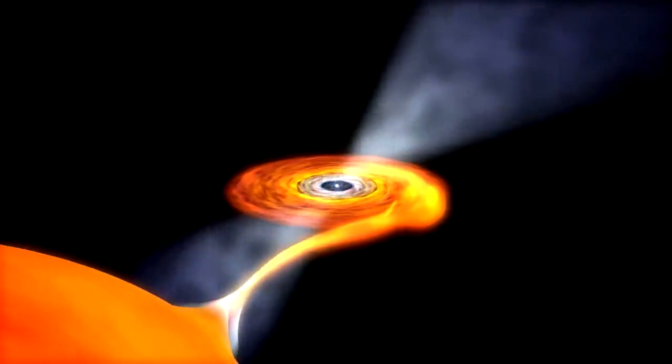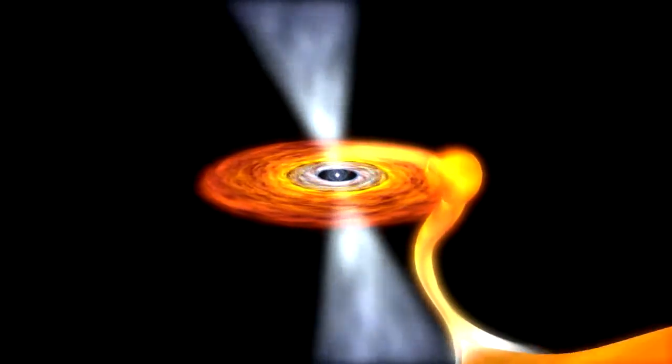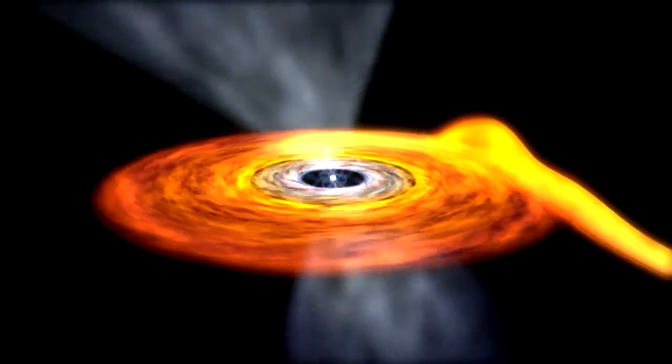Over time, the impact of gas pulled from the normal star has spun the pulsar up to incredible speeds. This accretion may be the cause of their weaker magnetic fields. Despite this, these pulsars also emit gamma rays.